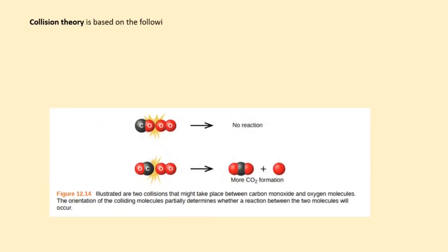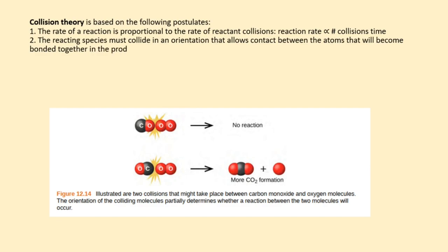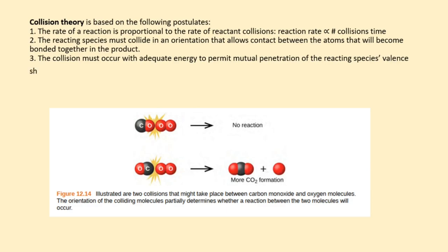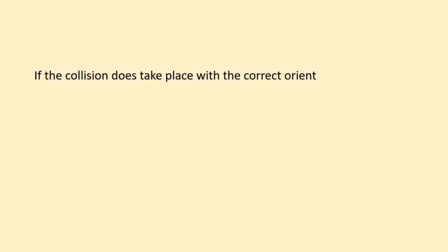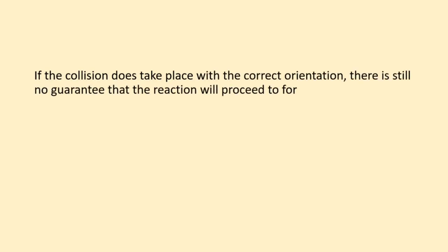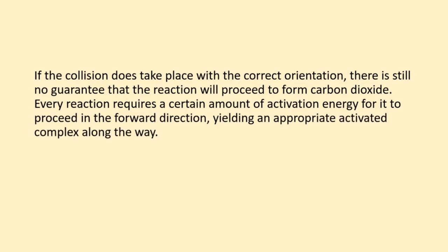Collision theory is based on the following postulates: 1. The rate of a reaction is proportional to the rate of reactant collisions. 2. The reacting species must collide in an orientation that allows contact between the atoms that will become bonded together in the product. 3. The collision must occur with adequate energy to permit mutual penetration of the reacting species's valence shells so that the electrons can rearrange and form new bonds and new chemical species. If the collision does take place with the correct orientation, there is still no guarantee that the reaction will proceed to form products. Every reaction requires a certain amount of activation energy for it to proceed in the forward direction, building an appropriate activated complex along the way.